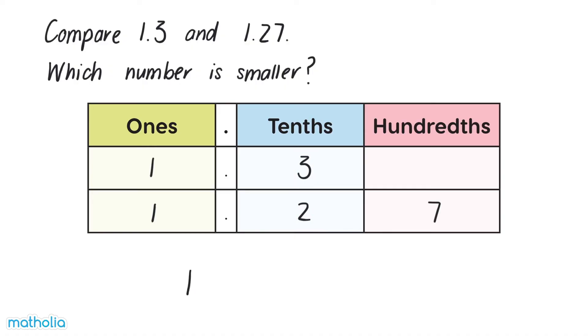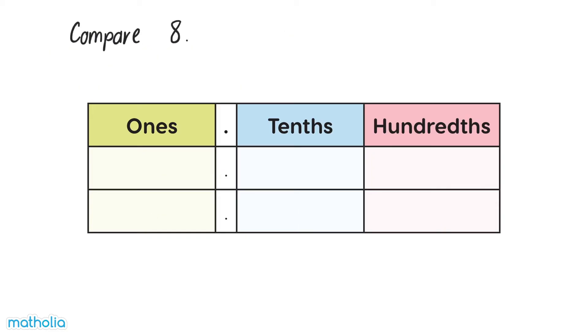So 1.27 is smaller than 1.3. Compare 8.36 and 8.31. Which number is greater? Let's write the numbers in a place value chart.